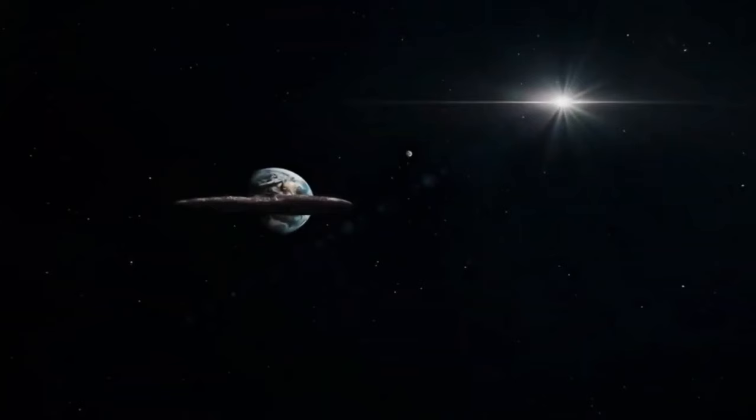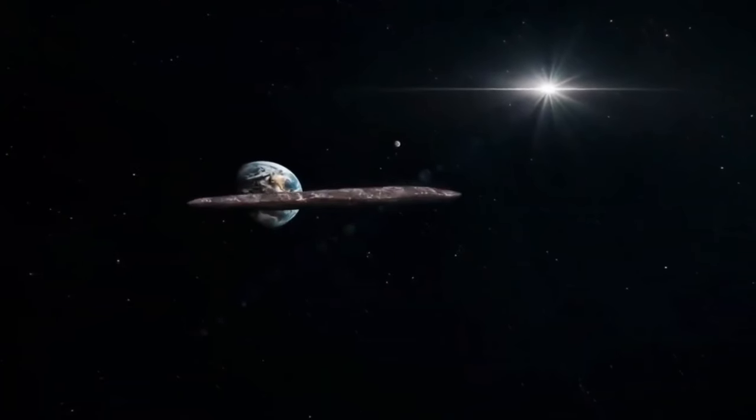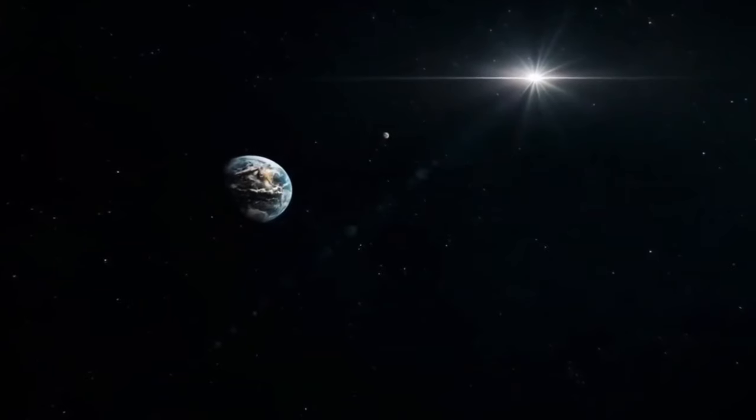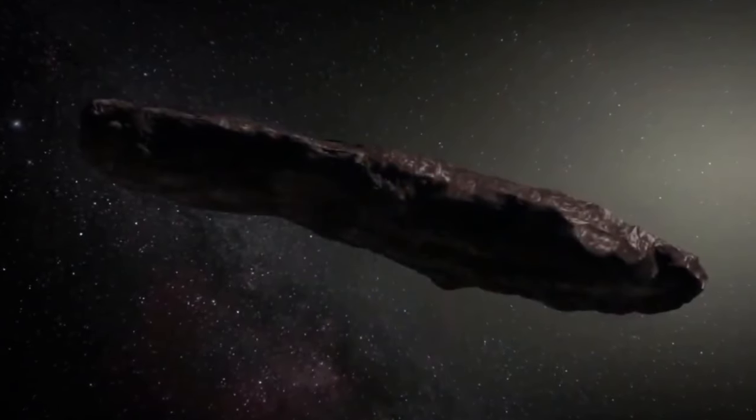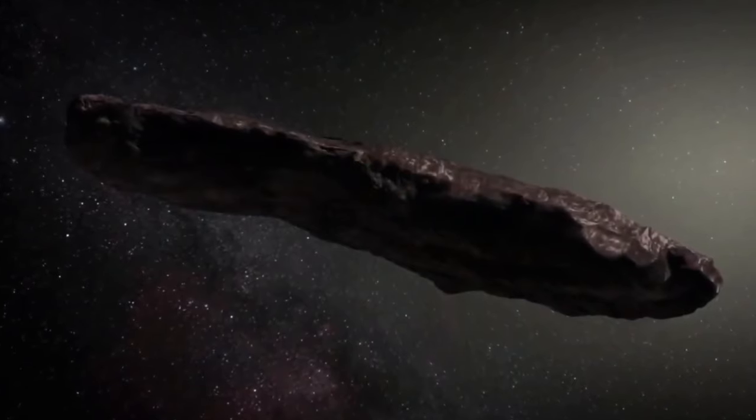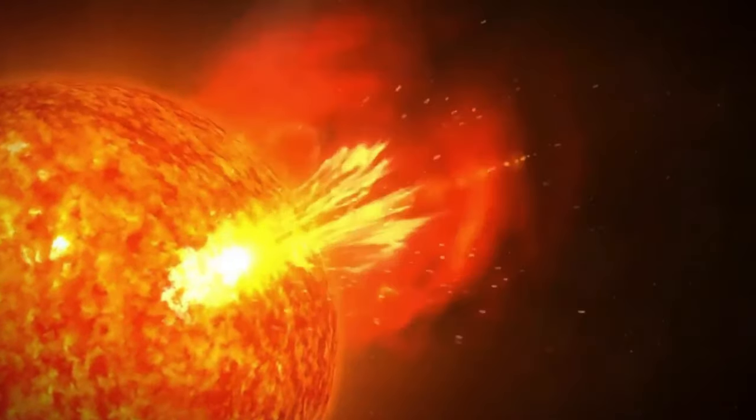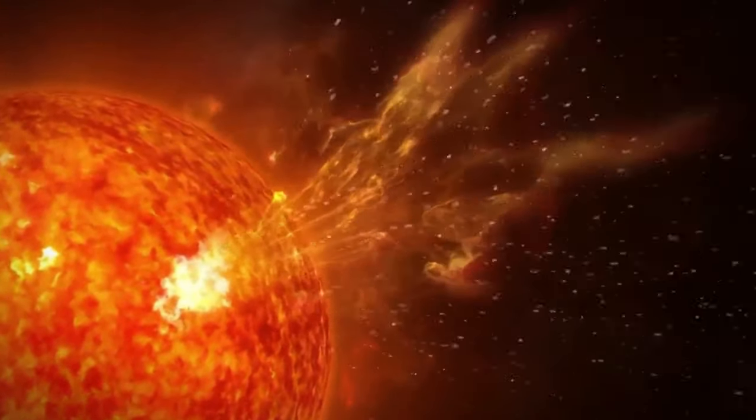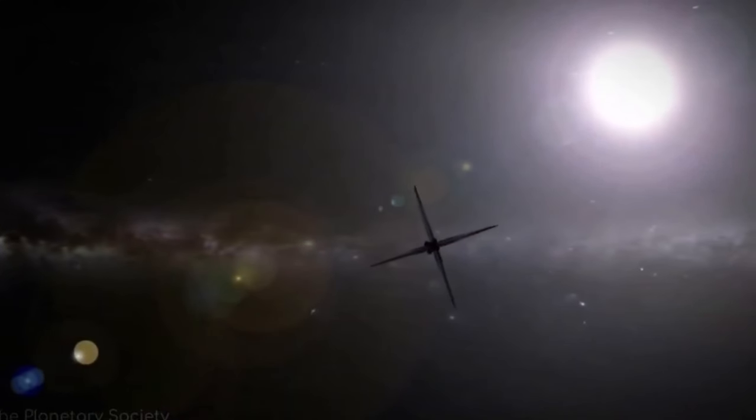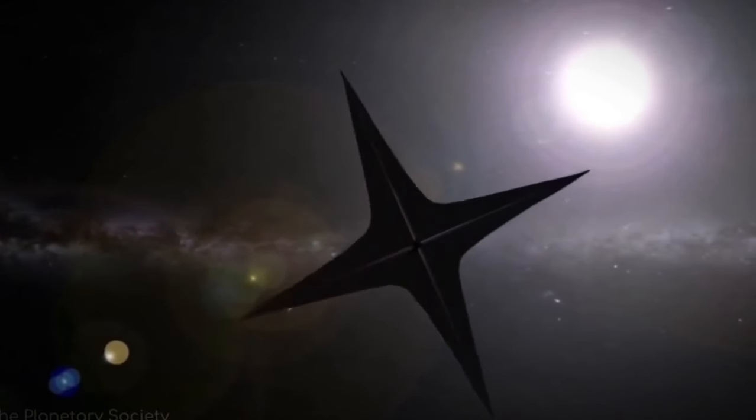Oumuamua was not discovered until over a month later on October 19, 2017, when University of Hawaii astronomer Rob Weryk spotted it in observations made by the asteroid-hunting Pan-STARRS system. At that time, Oumuamua was 21 million miles from Earth, and its closest approach brought it within 15 million miles. It has since been moving away from our solar system, propelled by a gravity boost from the sun. Due to its small size and rapid motion away from Earth, the window of opportunity to observe Oumuamua was short, lasting only a few weeks. The Hubble Space Telescope provided the longest observation period by combining data from two of the world's largest optical telescopes, the Very Large Telescope in Chile and the Gemini South Telescope.